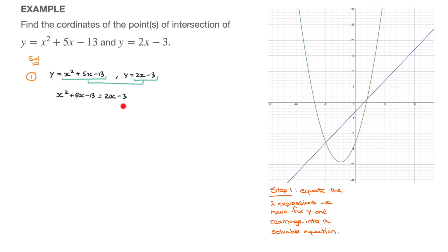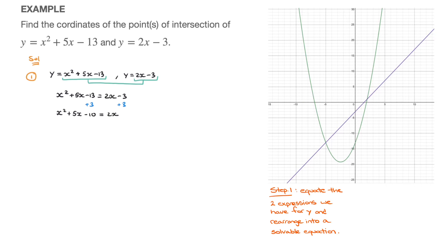To solve this, the first thing we'll do is gather all the terms on one side. I'll gather everything on the left-hand side. I start by adding 3 to both sides, giving x squared plus 5x minus 13 plus 3, which is minus 10, equals 2x. Then I subtract 2x from both sides, giving x squared plus 5x minus 2x — that's plus 3x — minus 10, which equals 0.